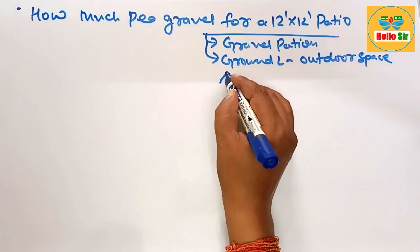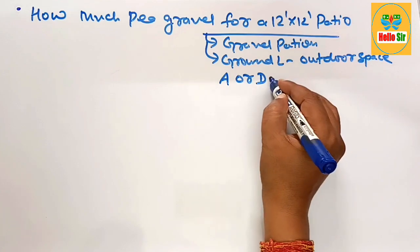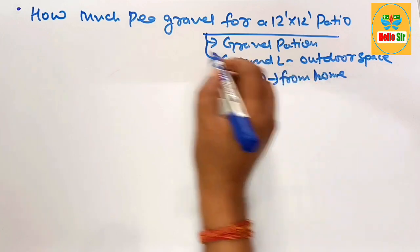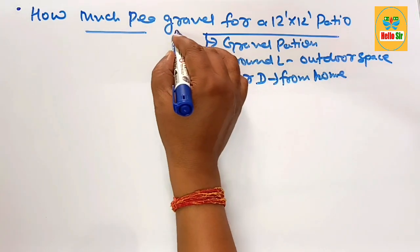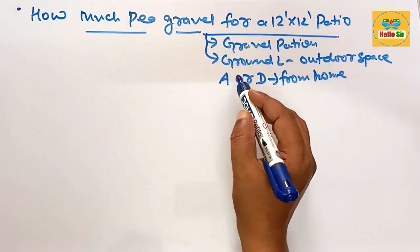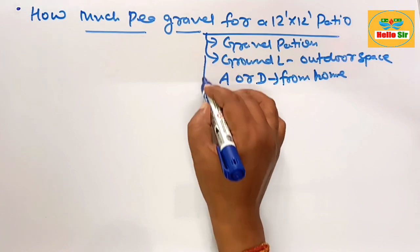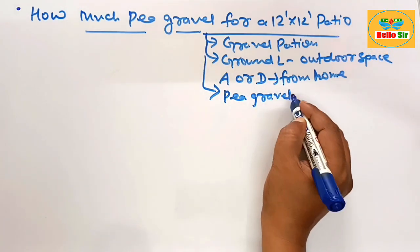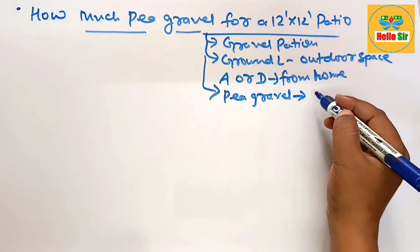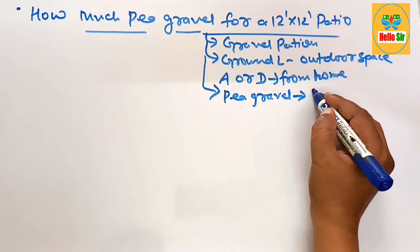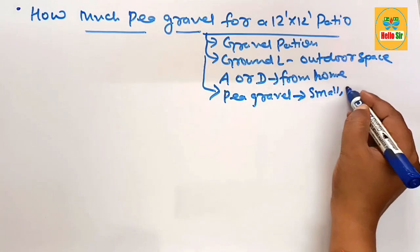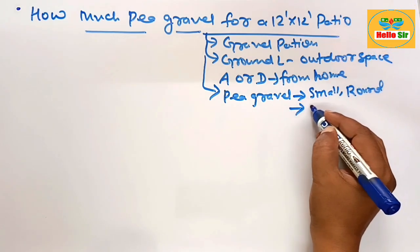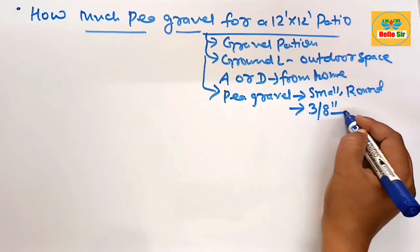You have required how much gravel to build a 12 foot by 12 foot space. You know that the pea gravel is best material to build gravel patio. It is small in size, round in shape, and the diameter of pea gravel is about 3/8 inch.